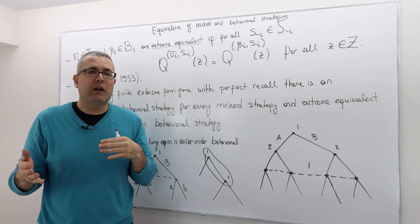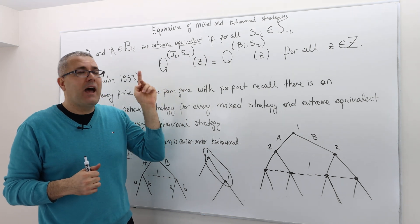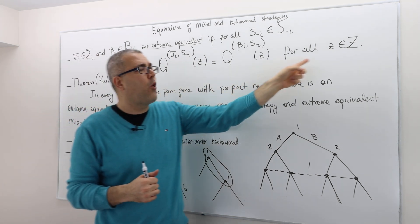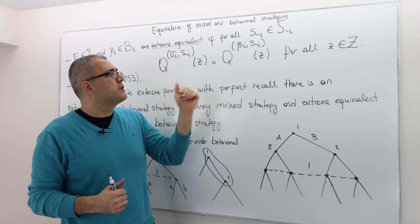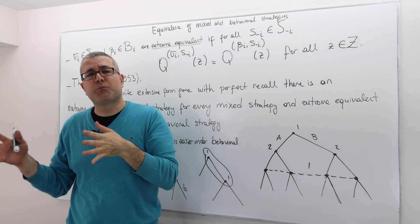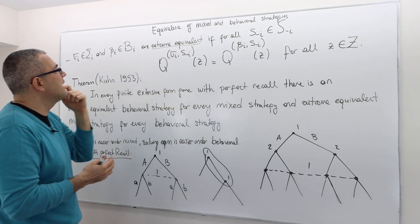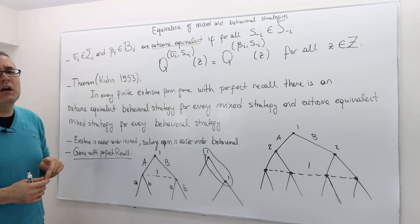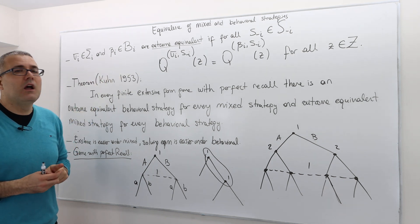This is a pretty strong requirement, because this equivalence must hold not only for all terminal histories, but also it must hold for all pure strategy profile of the opponents. So if this is the case, then we say these two strategies, mixed and behavioral strategy, are equivalent.